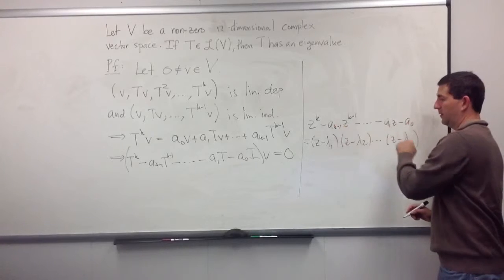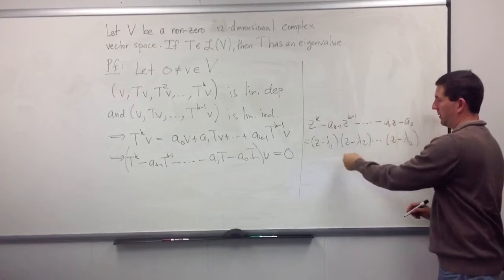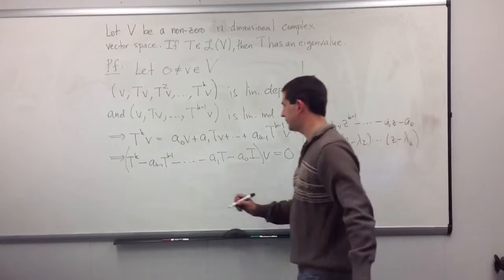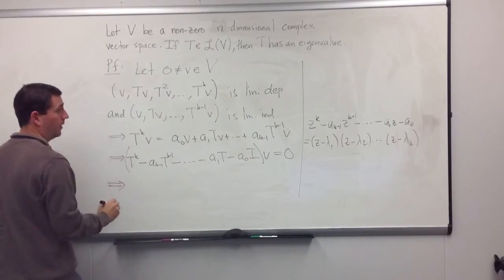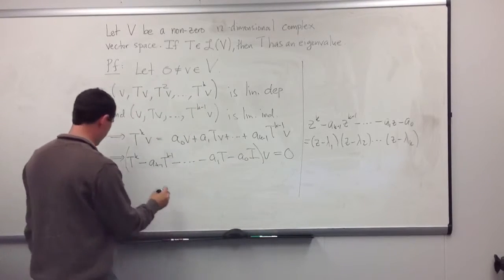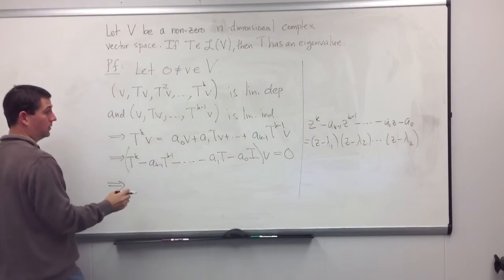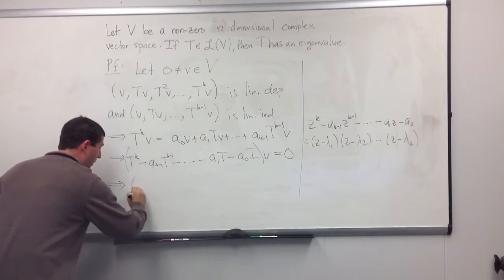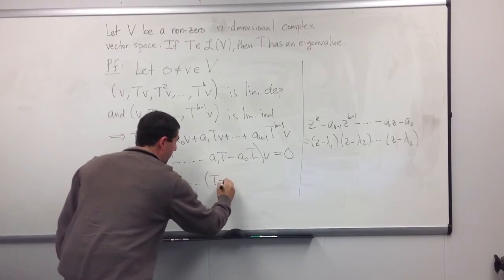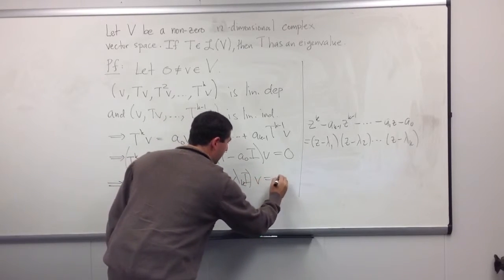Well, if this polynomial can be factored, then instead of applying this polynomial to the operator, we can apply this product of linear polynomials to the operator. So if I did that, I would get (T - λ₁I)⋯(T - λₖI) applied to v is equal to 0.